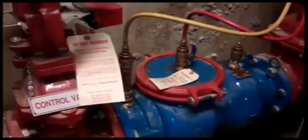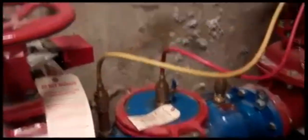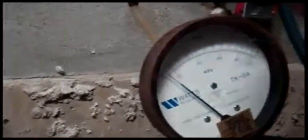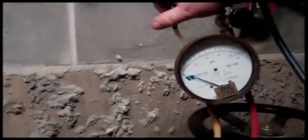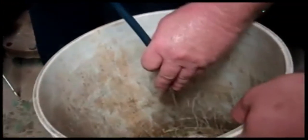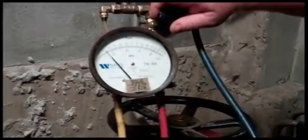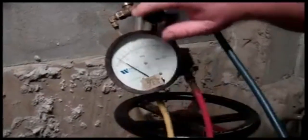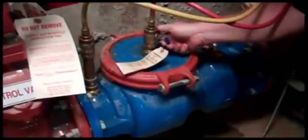The technician opens the test cocks on the backflow device, verifies that all those connections are tight, and then bleeds any air out of the backflow test kit. The valves are then closed, and the pressure difference between the front side and the back side of the first check is recorded.